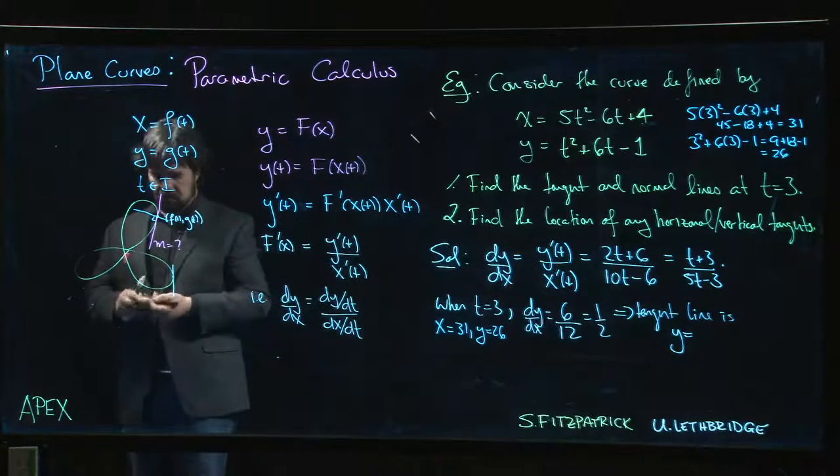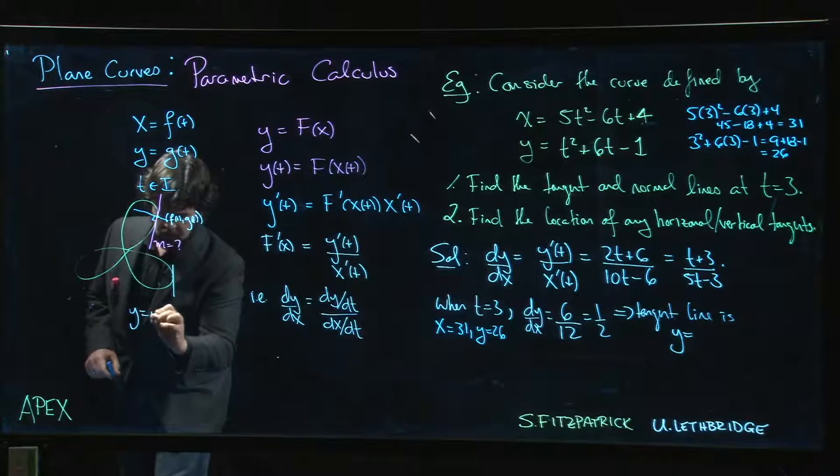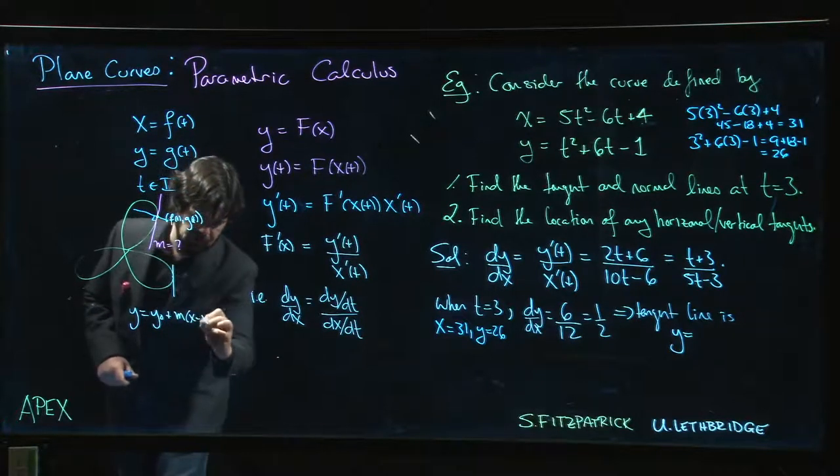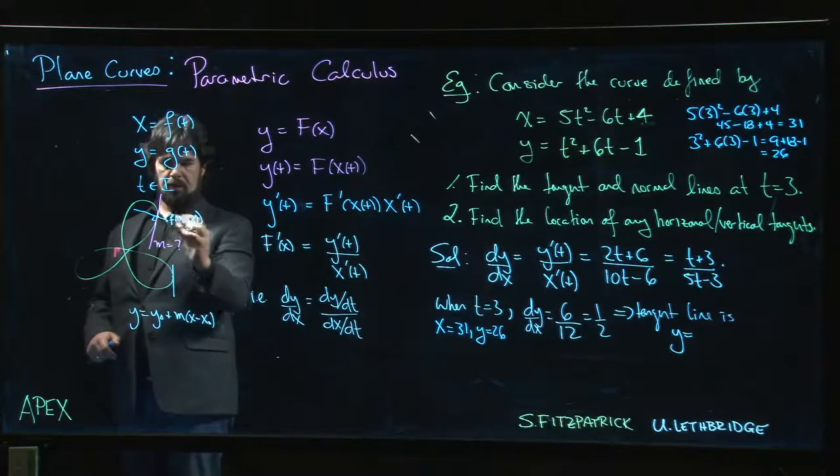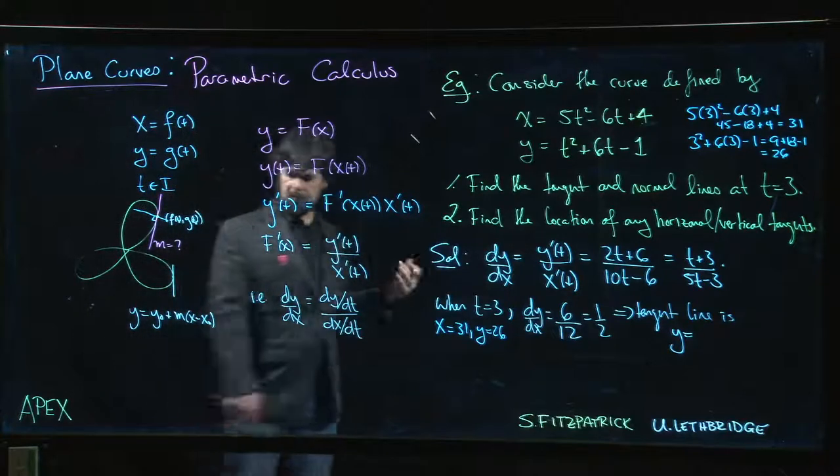Remember what the equation of the tangent line looks like. We use point-slope. We use y is equal to y naught plus m times x minus x naught, where x naught, y naught is this point, maybe we call that f of t naught, g of t naught.